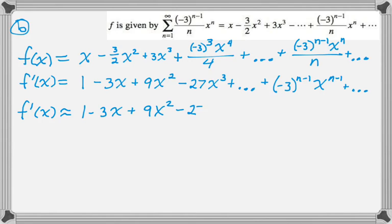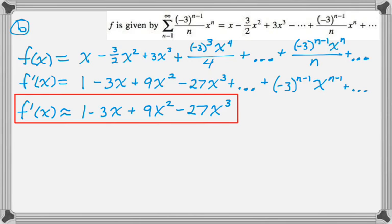So I actually only need the first four non-zero terms. So f'(x) is approximately the first four non-zero terms. So the next thing we're told to do is to rewrite f' as a rational function that is valid when the absolute value of x is less than r, where r is the 1/3 we found before.